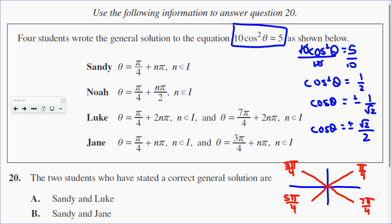So the first one, Sandy, let's look at her. She says pi over 4 plus pi n. So that would give us the pi over 4, but if we add pi, it would give us the 5 pi over 4.